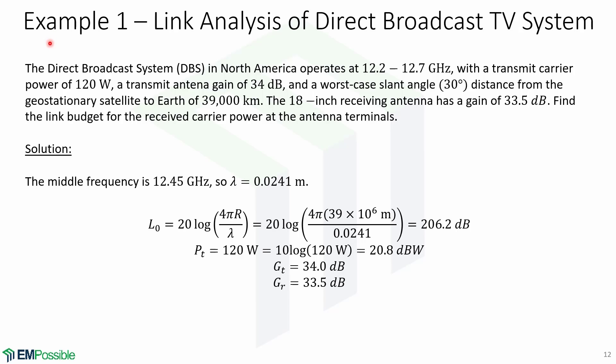Now let's look at some examples of link budget and Friis transmission formula. The direct broadcast system DBS in North America operates at 12.2 to 12.7 GHz, with a transmit carrier power of 120 watts, a transmit antenna gain of 34 dB, and a worst-case slant angle of 30 degrees, distance from the geostationary satellite to Earth of 39,000 kilometers. The 18-inch receiving antenna has a gain of 33.5 dB.